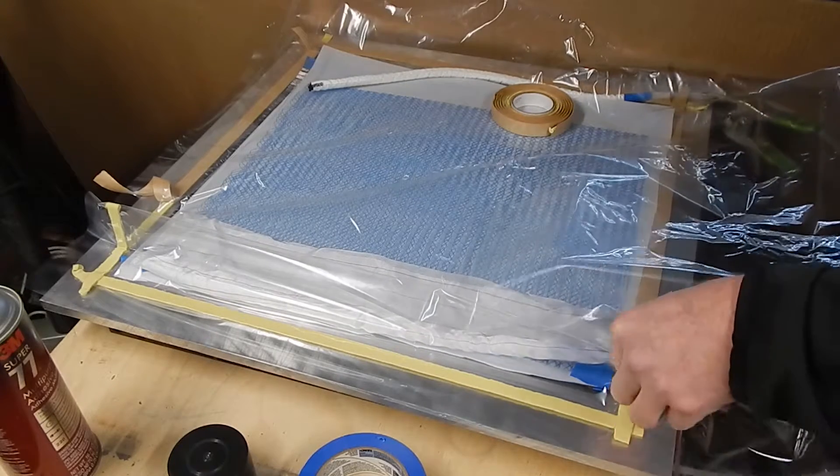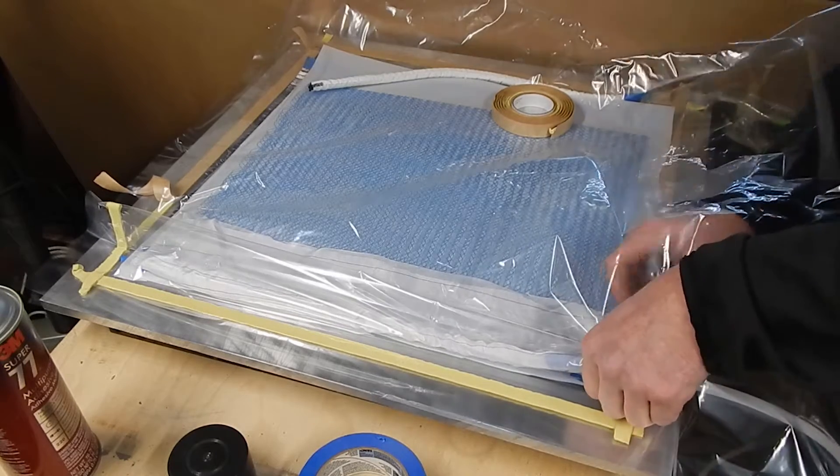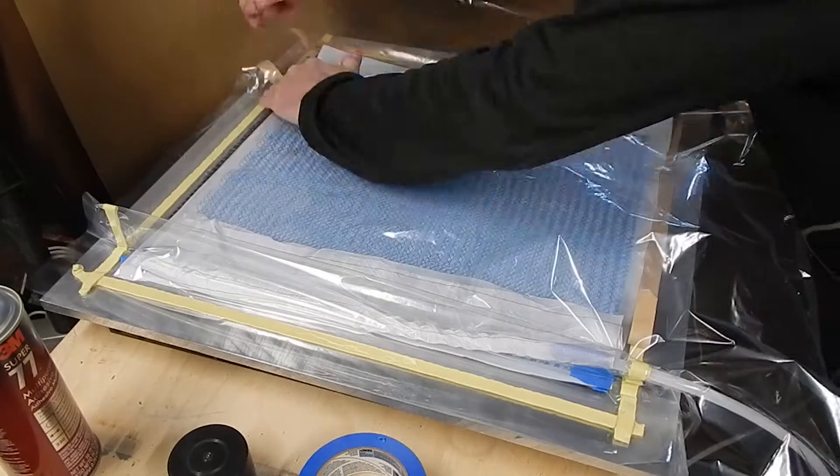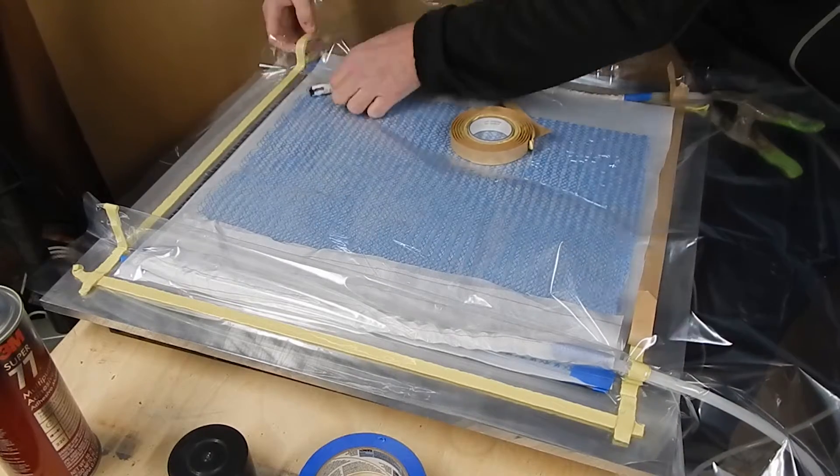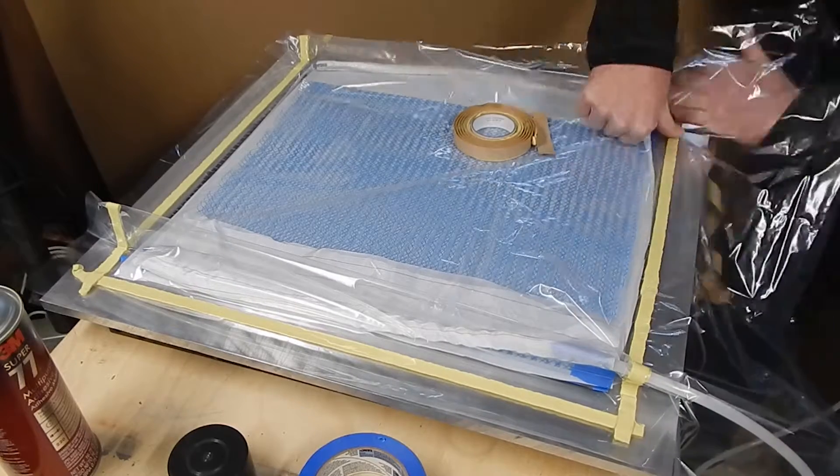This is an easy place to cause a leak around hoses going through bags. So it pays to give yourself some extra room. I'll do another very similar pleat down at the other end where the vacuum side hose goes through.